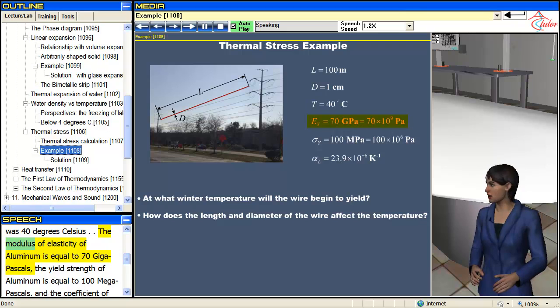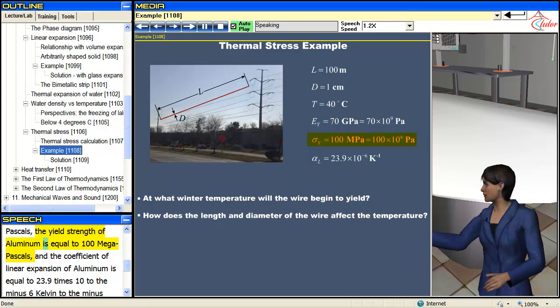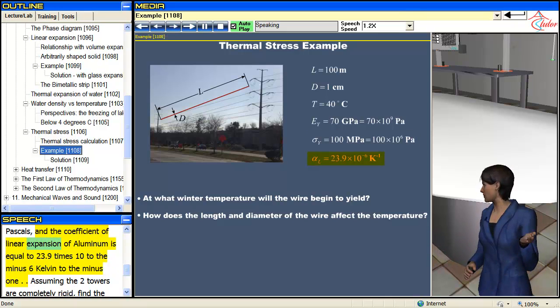The modulus of elasticity of aluminum is equal to 70 gigapascals, the yield strength of aluminum is equal to 100 megapascals, and the coefficient of linear expansion of aluminum is equal to 23.9 times 10 to the minus 6 Kelvin to the minus 1.